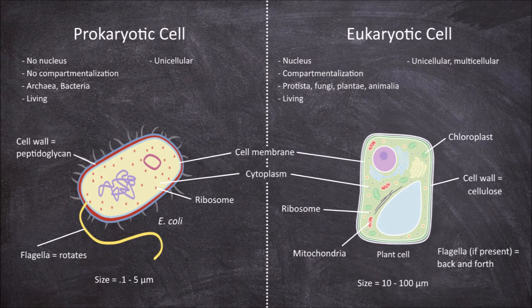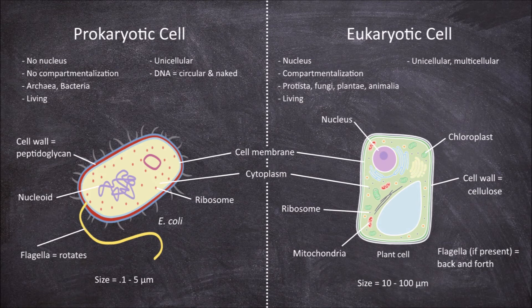Because there are no membrane-bound organelles, the DNA in prokaryotes is in a nucleoid, which has no nuclear membrane. DNA in eukaryotic cells is found in the nucleus, which has a nuclear membrane enclosing the genetic material. In prokaryotes, this DNA is circular, naked, and usually doesn't have introns.